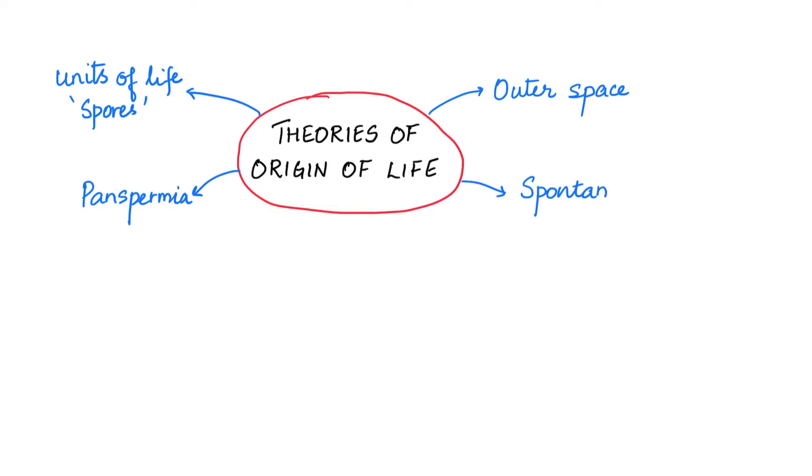Then came the theory of spontaneous generation. This theory suggested that life arose from decaying and rotting matter like straw, mud, etc.